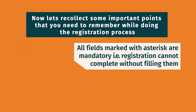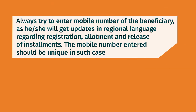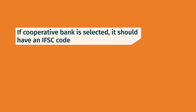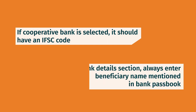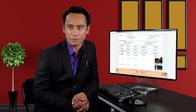Now let's recollect some important points to remember while filling the registration form. All fields marked with asterisks are mandatory. Always try to give the ownership title in the woman's name; in rare cases joint ownership can also be selected. Always try to enter the mobile number of the beneficiary so they get updates in the regional language regarding registration, allotment, and release of installments — the mobile number should be unique. If you enter Aadhaar details, always upload the consent form. If a cooperative bank is selected, it should have an IFSC code. Always enter the beneficiary name as mentioned in the bank passbook. In this video we have learned the registration process of PMAYG beneficiaries, how to rectify the registration form, and how to track progress. Stay tuned to learn other features of AwaasSoft. Goodbye.